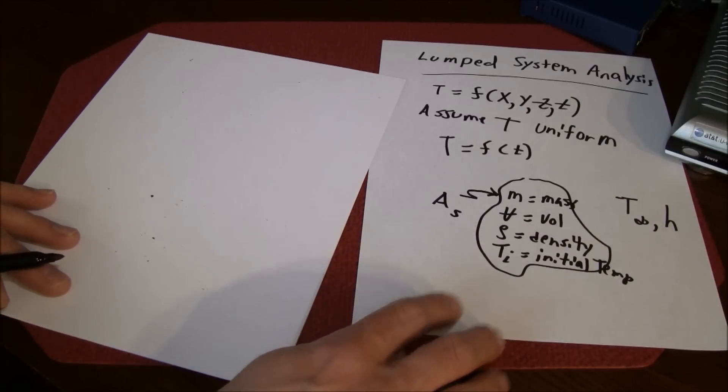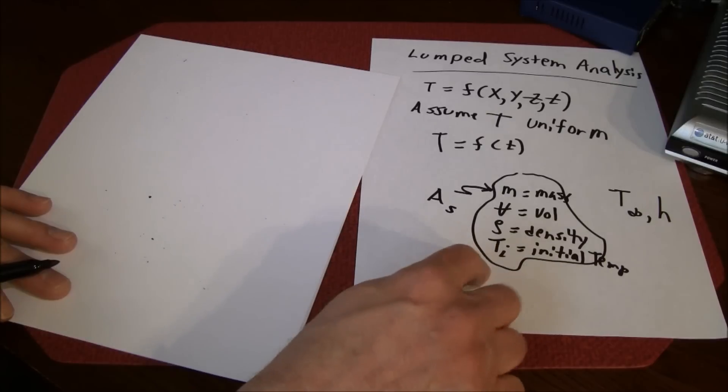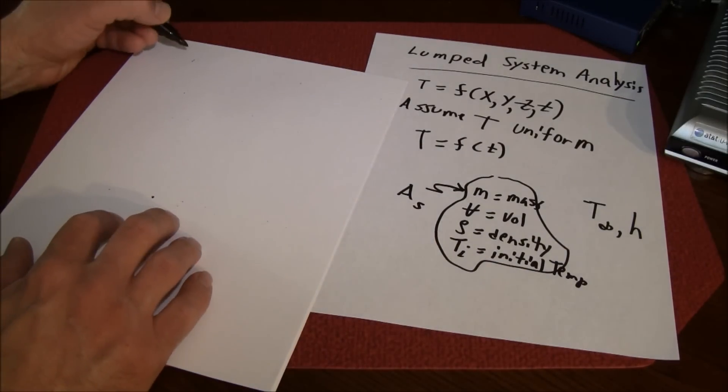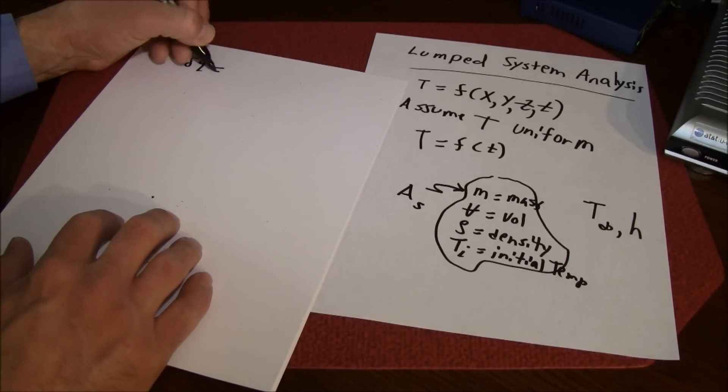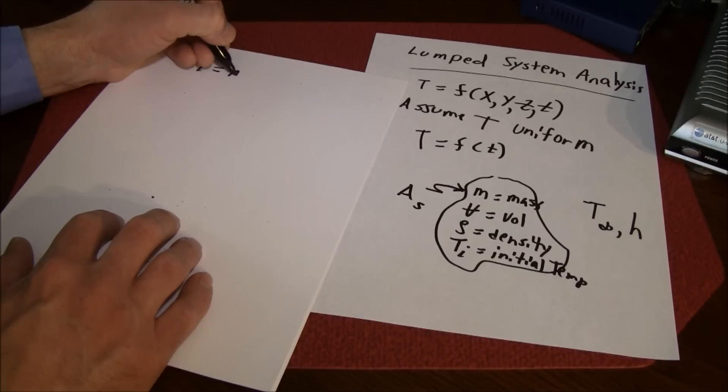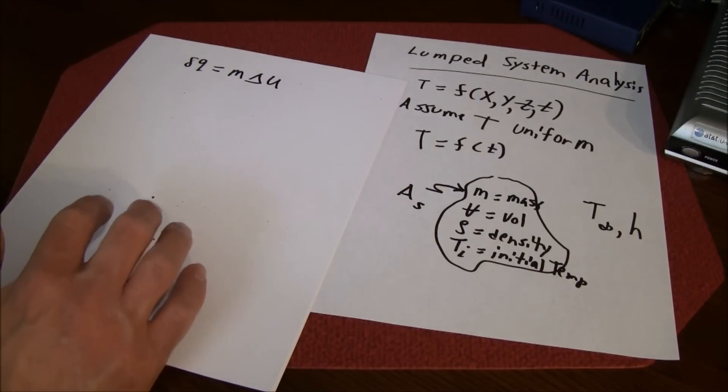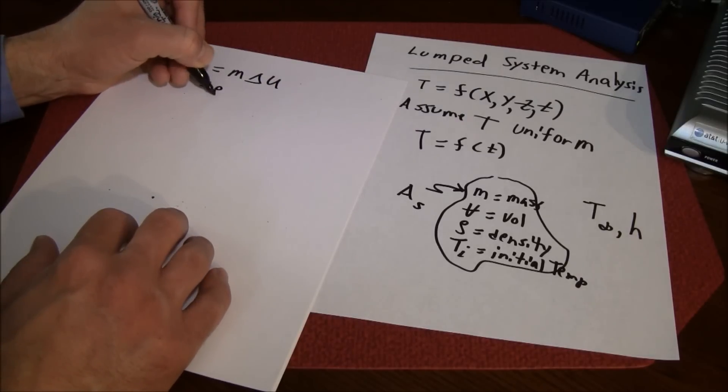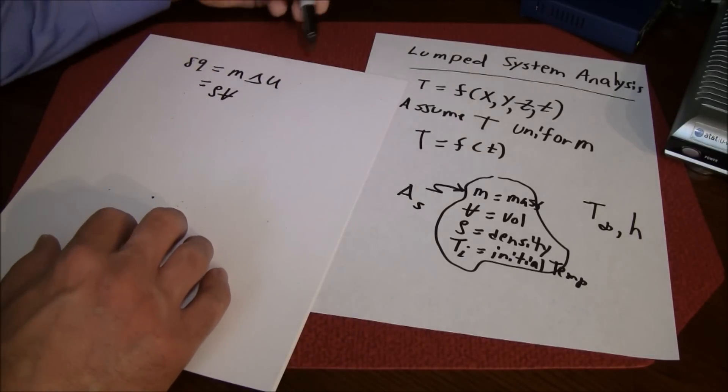From thermo, if we did a first law analysis of this object, we could say that some small amount of heat transfer delta q is equal to mass times the change in internal energy. We can rewrite the mass as density times volume.